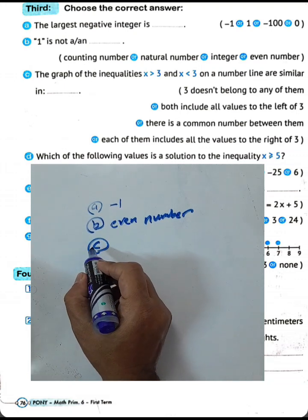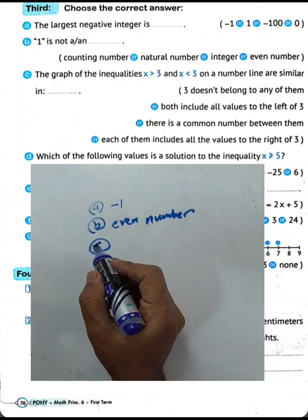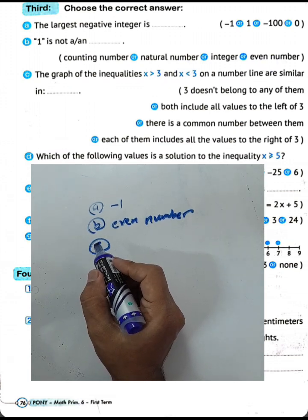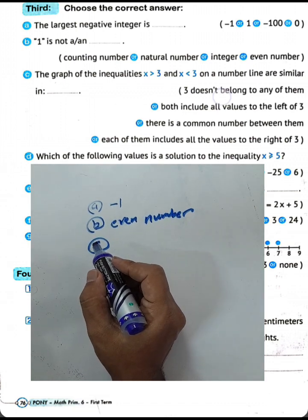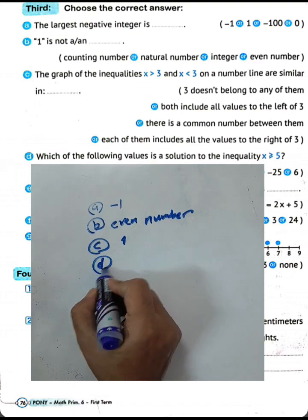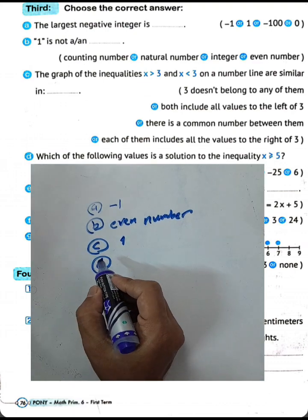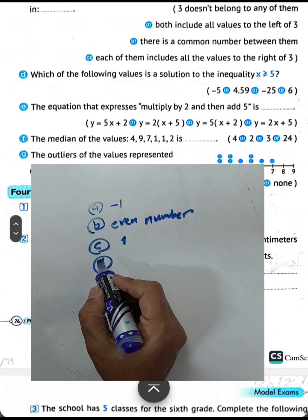Letter C: the graph of the inequality x greater than 3 on a number line — 3 does not belong to the solution set, shown with an open circle. This shows the first solution.